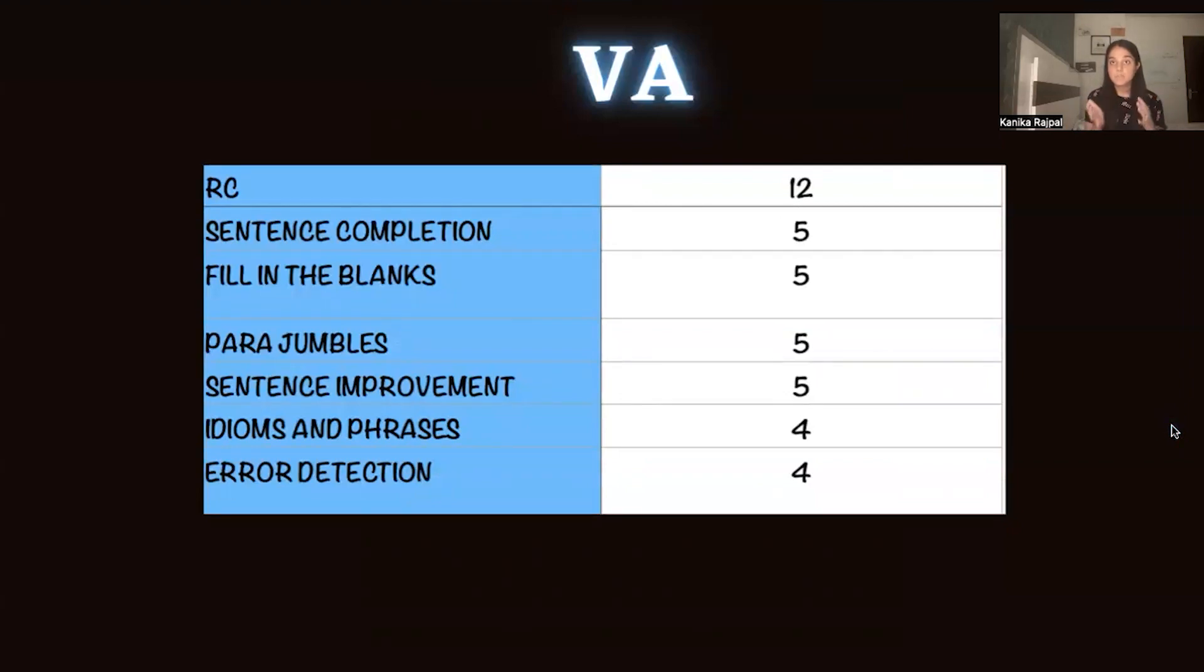Now moving on to verbal ability, the pattern was pretty much the same as 2022. The only difference was in idioms and phrases where a lot more phrasal verbs were there than idioms. Since we do not know if in 2024 they'll focus more on idioms or phrasal verbs, I think as a 2024 aspirant, you should focus on phrasal verbs this time. If you're asking where should we practice it from, if you're a CBSE student, you might not be very familiar with phrasal verbs because it is a concept that is very frequently tested in ICSE board examinations.